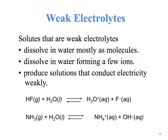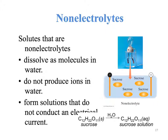Weak electrolytes are those that do not dissolve completely in water and will not conduct electricity as well as strong electrolytes. When in water, they don't dissociate completely, so we use a reversible arrow to show the reaction is reversible. Non-electrolytes are those that will not form ions in solution — they will not dissociate to have charges, and they will not conduct electricity at all.